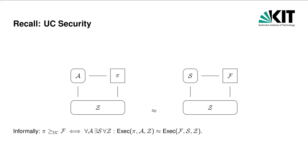In order to argue about the security of a protocol pi, we compare its behavior to an ideal functionality, denoted by f, which is incorruptible and performs the desired task by definition. If the execution of the real protocol pi and the ideal functionality f are indistinguishable, then nothing bad can happen in the real execution. To this end, we have to prove the existence of a simulator, which lives in the ideal world and simulates the execution of the real protocol. The simulation must succeed without knowledge of the secrets of honest parties. We say that protocol pi UC emulates a functionality f.